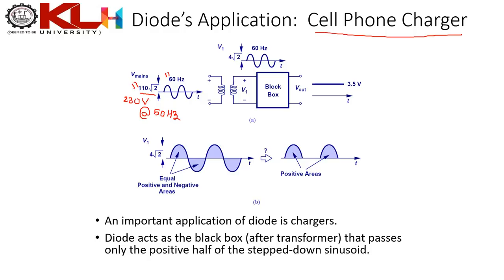The power supplied from power plants is AC in nature — it is sinusoidal, with a positive peak and a negative peak. If you fed 230 V directly to your mobile phone it would result in smoke and fireworks. So inside the cell phone charger, this 230 V is stepped down using a step-down transformer.